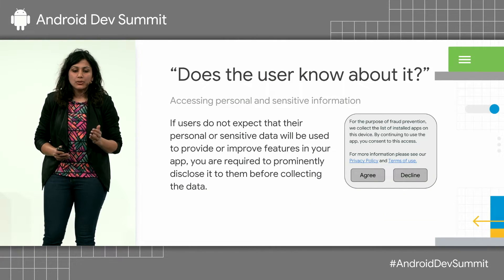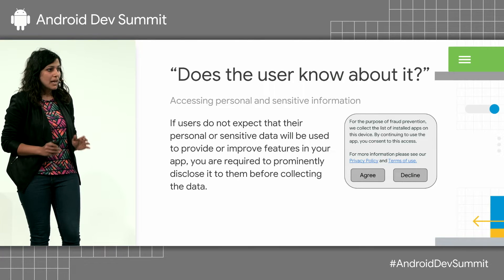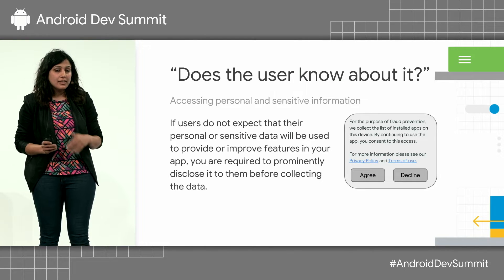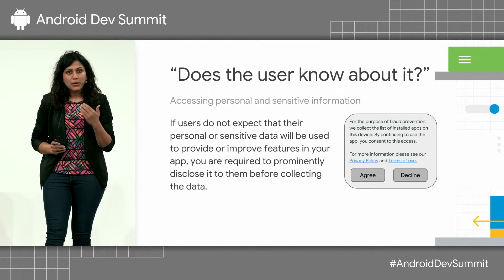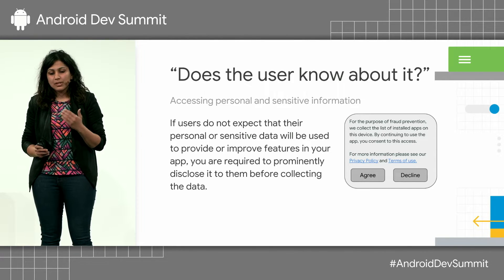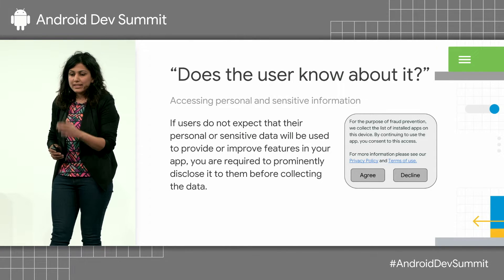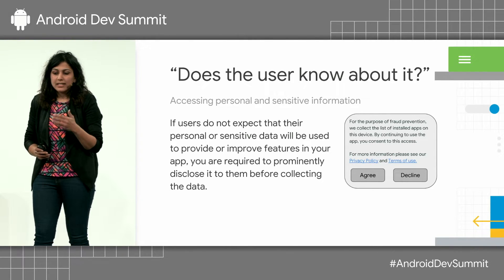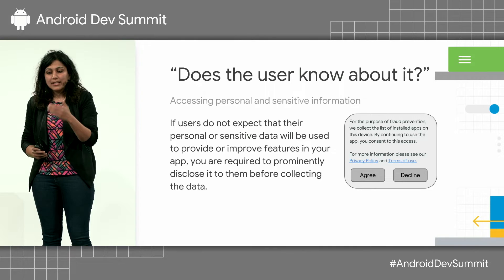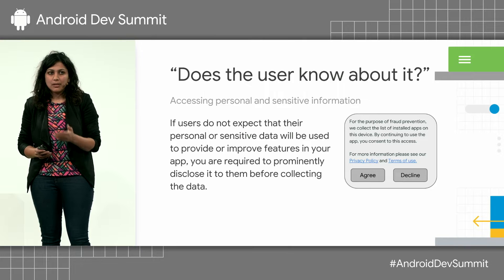You want to ensure that your users are aware of what data is being collected and how it is being used. This is not just a best practice, but it's actually a requirement by Google Play policy. A rule of thumb is that if a user is not aware that some data about them is about to be collected and for what purpose, you're required to prominently disclose it to them and get their permission. For example, if you're collecting the list of installed apps on a user's device for fraud prevention purposes, this needs to be prominently disclosed to the user, and only after consent should the data be transferred.